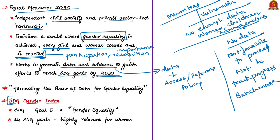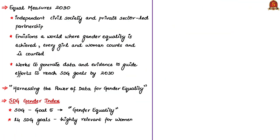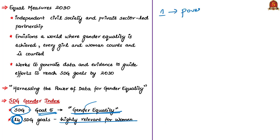The SDG Gender Index is based on a report published by Equal Measures 2030 titled 'Harnessing the Power of Data for Gender Equality.' SDG goal number 5 is titled Gender Equality, but its targets do not include the term transgender, which appears to be ignored or neglected in the drafting. SDG goal 5 gives various targets with respect to women and female children, but almost 14 sustainable development goals have high relevance to women and female children, not just SDG 5. For example, SDG goal 1 talks about eliminating poverty and should be linked with how many women are below the poverty line.